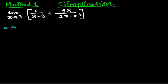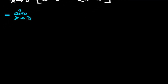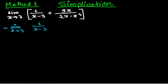So here, limit when x tends to 3, 1 upon x minus 3. Now see here: on this side, the first is variable and the second is constant. But here, the first one is constant and the second one is variable. Later we have to take the LCM also of this.